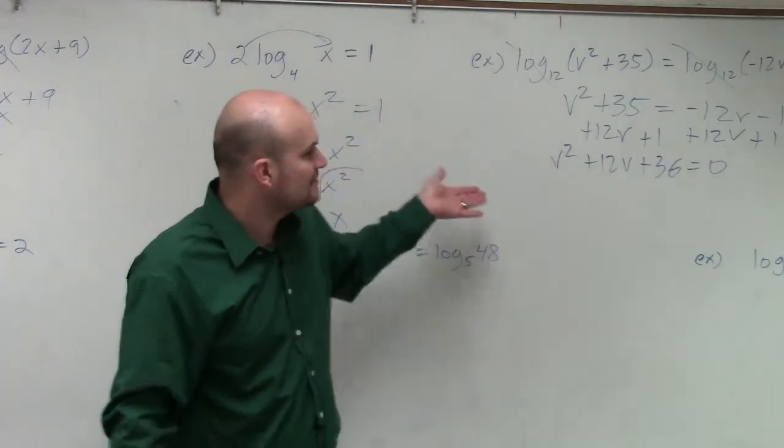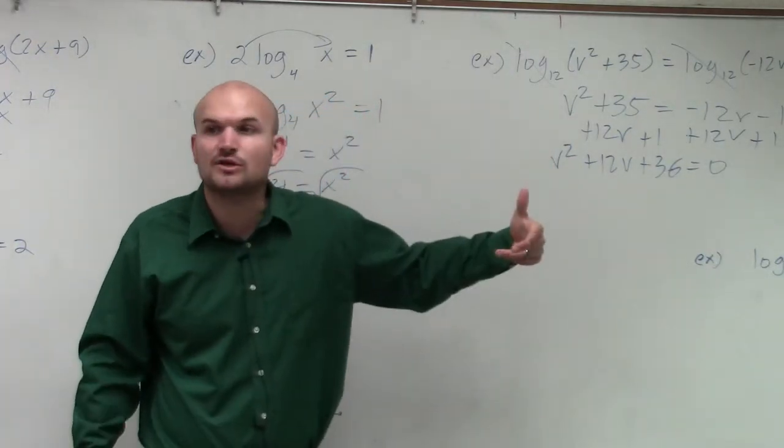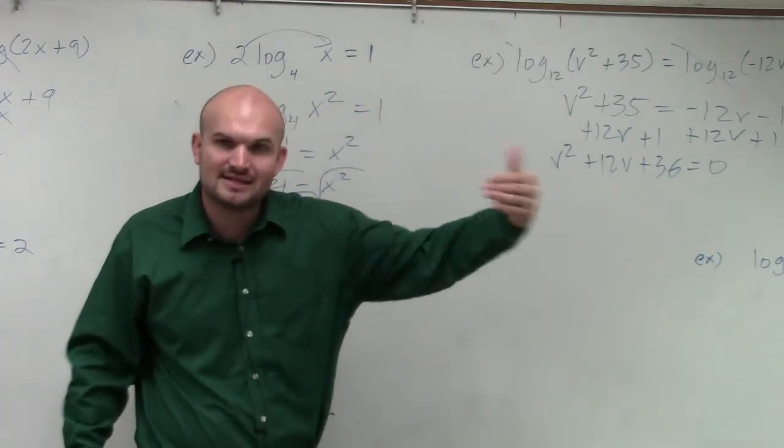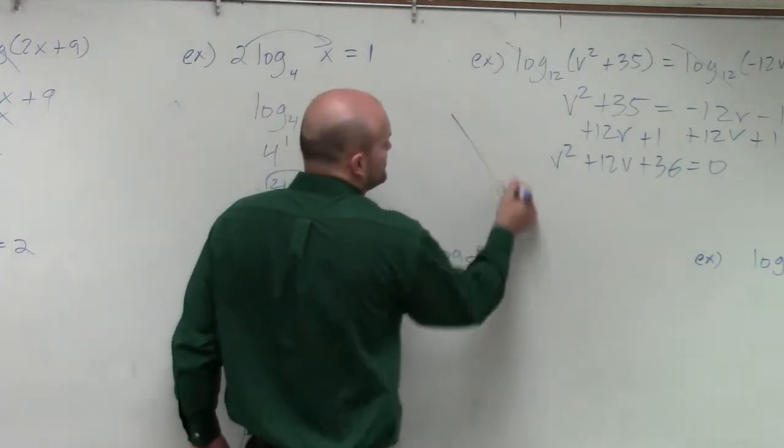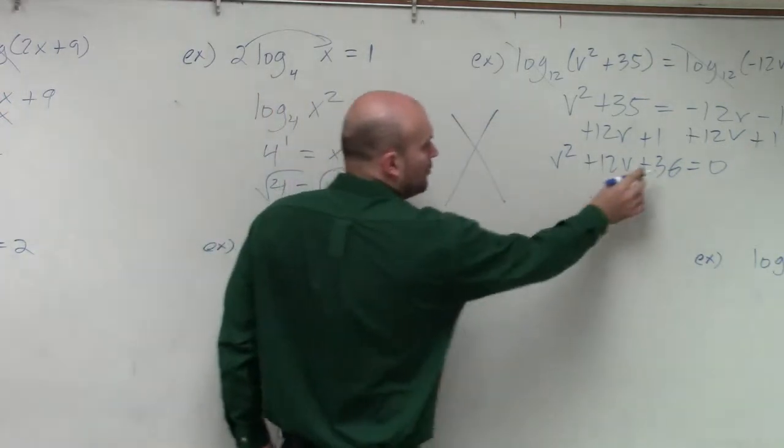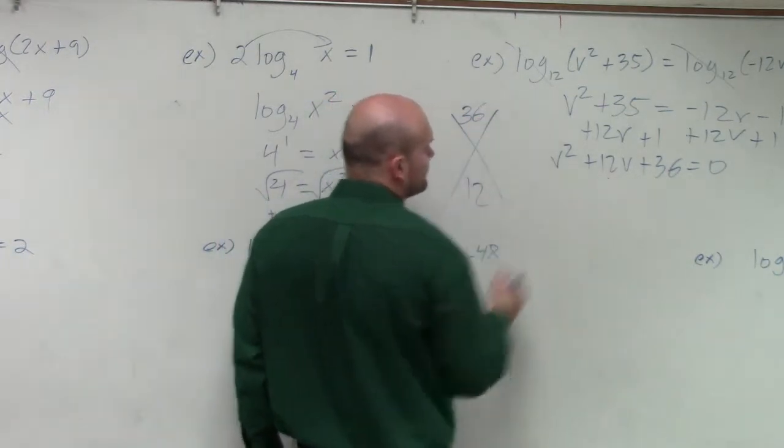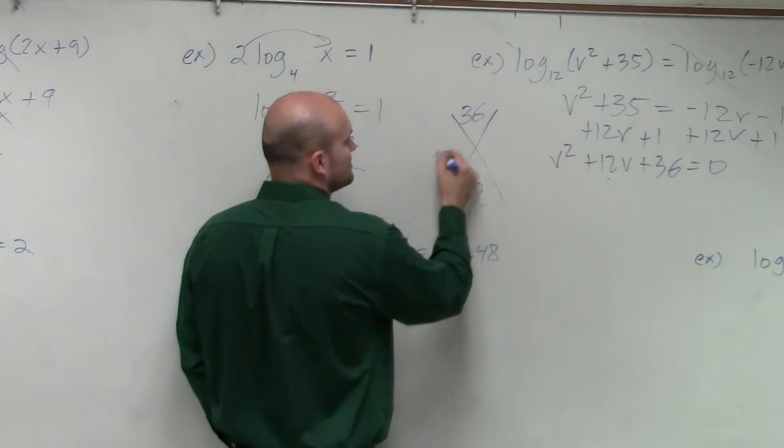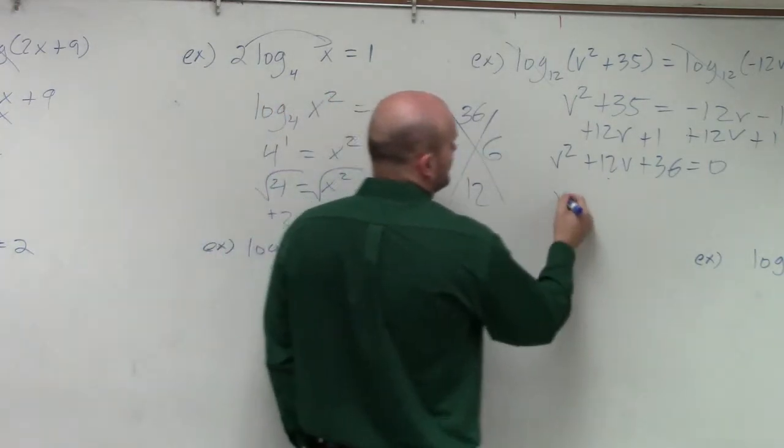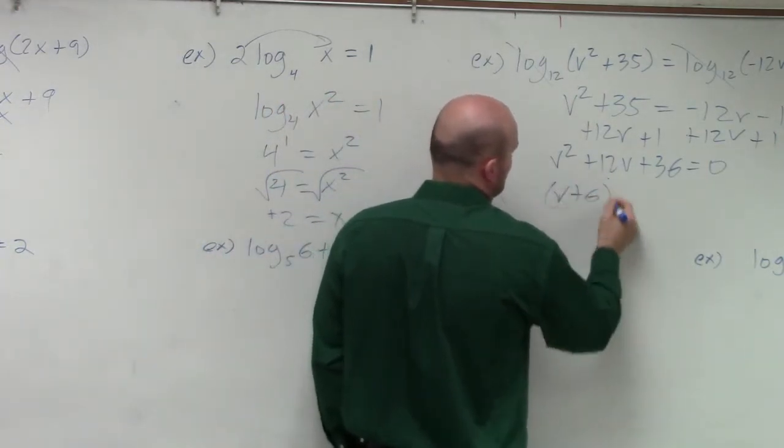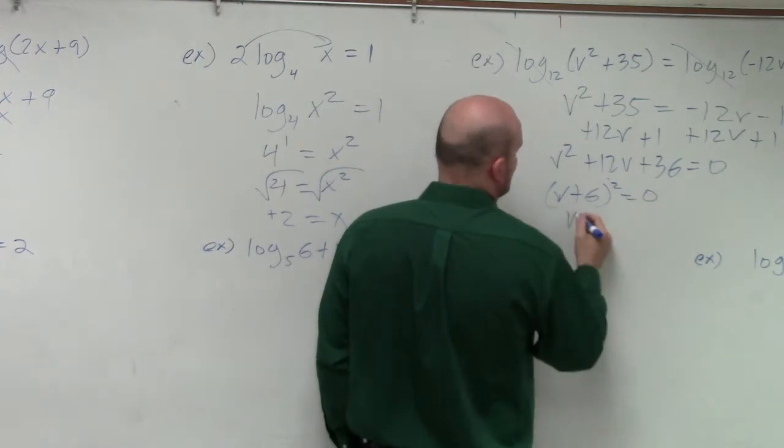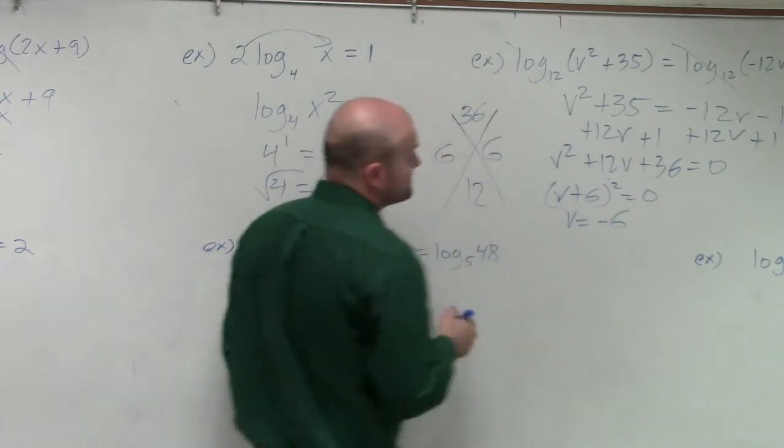Because remember, quadratics, the first thing we learned in solving quadratics, you had to set them equal to 0. Then, once you set them equal to 0, what two numbers multiply to give you 36 and then add to give you 12? 6. 6 and 6. So v plus 6 squared equals 0. So v equals negative 6.